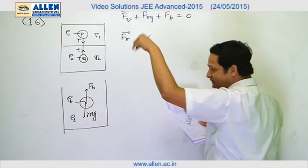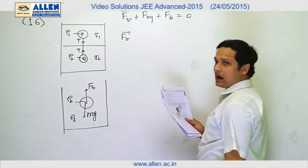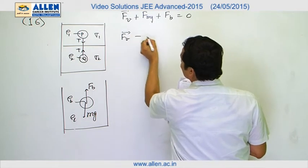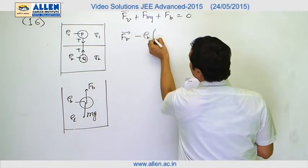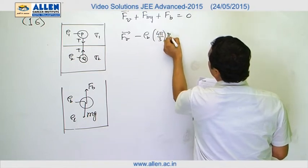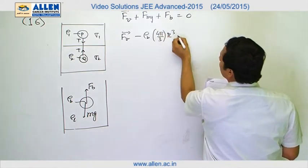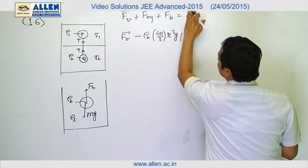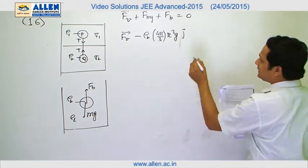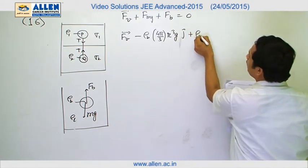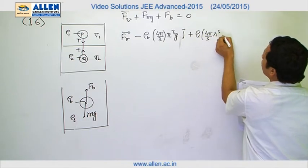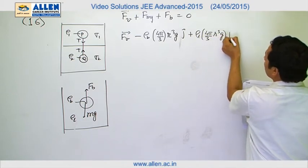So viscous force, mg force is downward. We consider upward direction to be positive. It will be minus rho B times 4 pi by 3 R cubed times G j cap, and buoyant force is upward: plus rho L times 4 pi by 3 R cubed times G j cap.